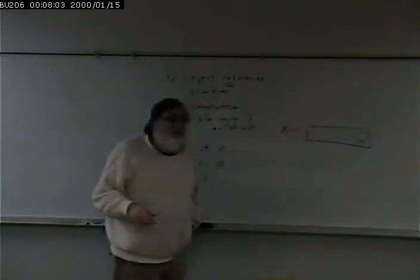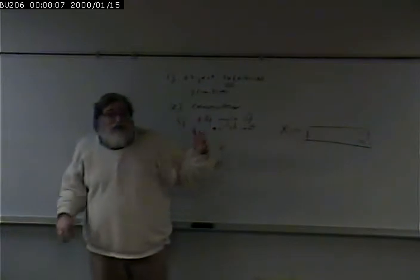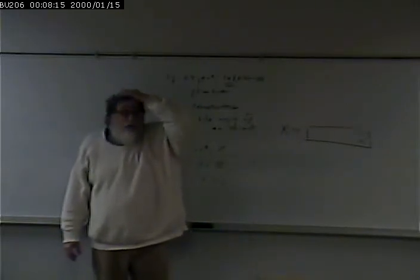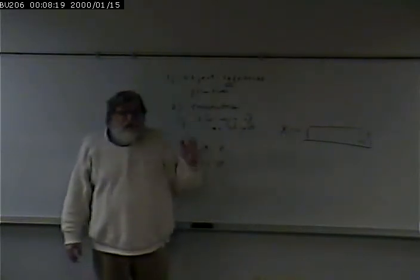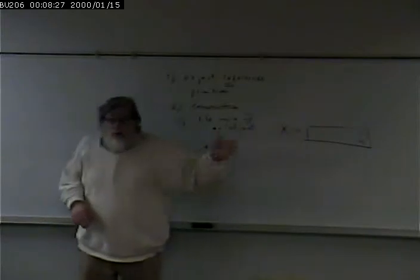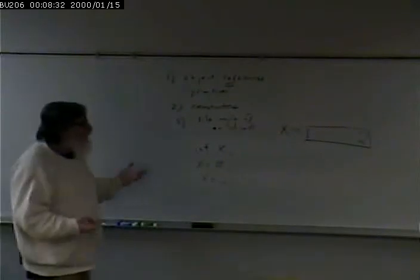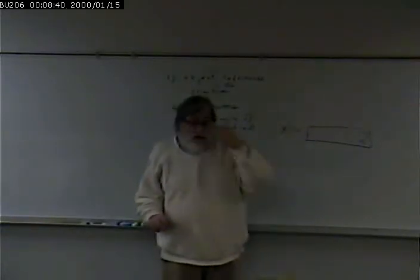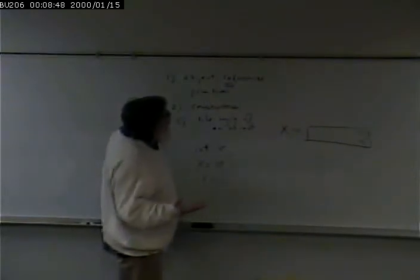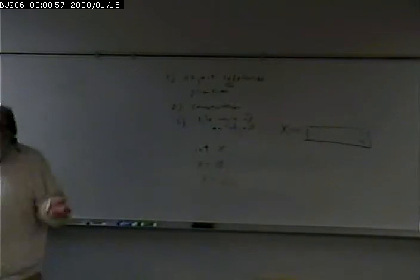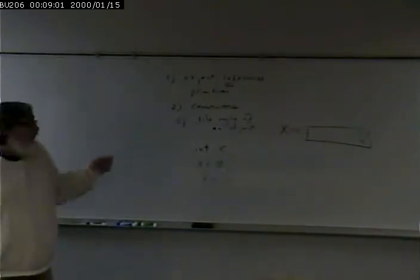Objects are more complex than primitives because they can have multiple attributes and multiple behaviors. A primitive like an integer is just a value. An object like a rectangle has multiple attributes associated with it and multiple behaviors.